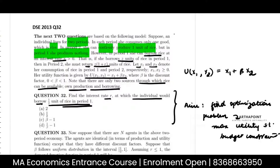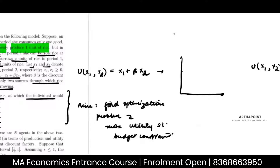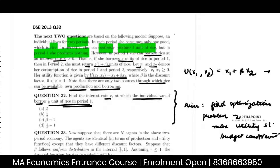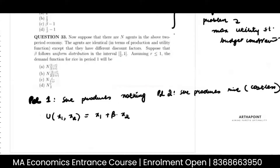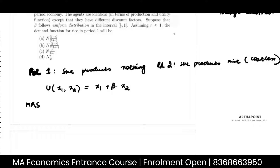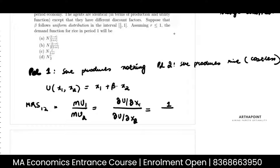Since we have a linear utility function, we have to apply what we did in the case of substitute goods. I have to find the MRS and think about what happens when MRS is greater than PX by PY, and when MRS is less than PX by PY. The MRS will be given by MU1 by MU2 — how utility changes when good 1 changes divided by how utility changes when good 2 changes — and this will be 1 upon beta.